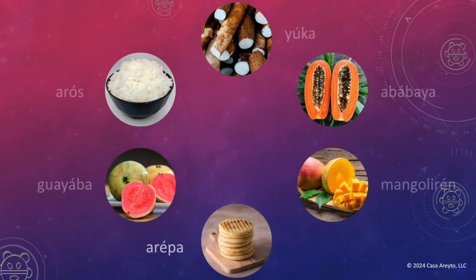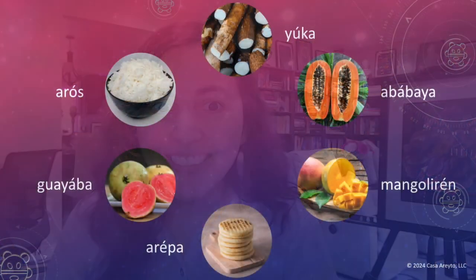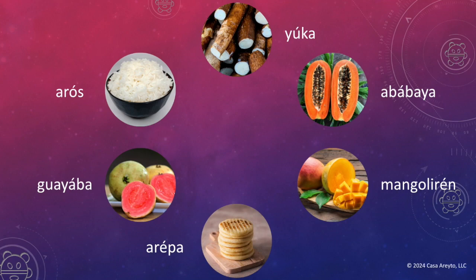So how are these things connected? Yucca, Ababaya, Mangolirin, Arepa, Guayaba, Arroz. What is the connection? Of course, they are ima — food. See, that was super easy.